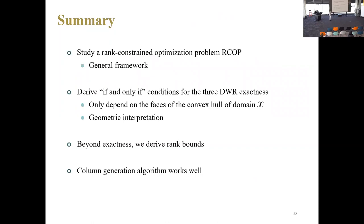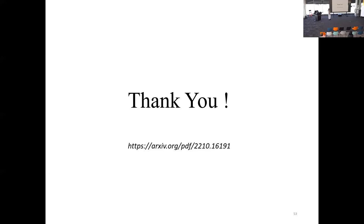Here's a summary. We propose a rank-constraint optimization problem RCLPT that admits a high degree of flexibility and can cover many problems in literature. First, we derive the if-and-only-if conditions to show when the relaxation DWR is equivalent to the original RCLPT. Beyond the exactness, if the DWR is not exact, we show the theoretical guarantee of its performance via rank bounds. Finally, we solve it using a column generation algorithm with a much more tractable pricing problem. That's all for today. Part of our work is available online. Please feel free to reach out or email me if you have any questions. Thank you for listening — I'm happy to take any questions.